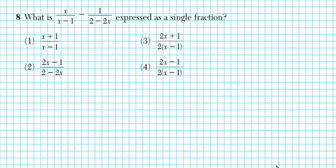Alright. Let's take a look at number eight. It says what is x over x minus one minus one over two minus two x expressed as a single fraction. So let's go ahead and combine these two algebraic fractions. x over x minus one minus one over two minus two x. So remember, from arithmetic that if you want to add two numbers, the denominators must be identical. The same applies to algebraic fractions. The denominator expressions must be identical before you can combine the two fractions.